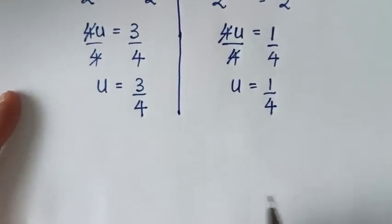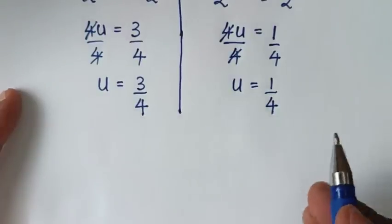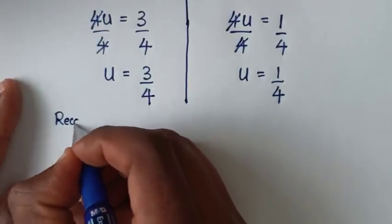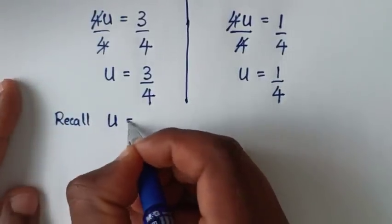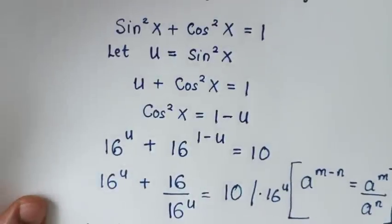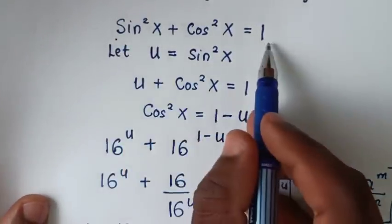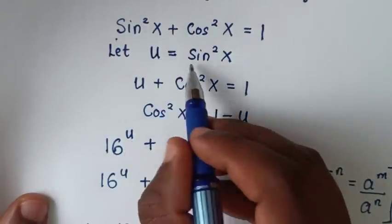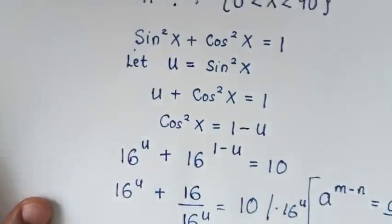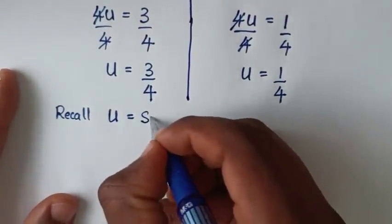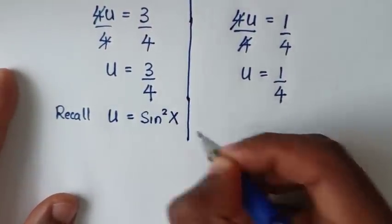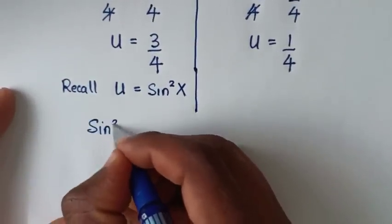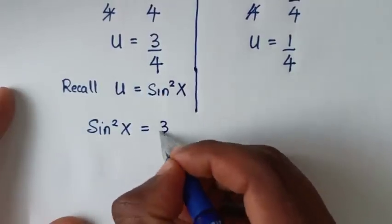We already have two values of u, but we need to find the value of x. Recalling that we let u equal to sine square x, comparing the two equations: from the first solution, sine square x equals 3 over 4, and from the second solution, sine square x equals 1 over 4.